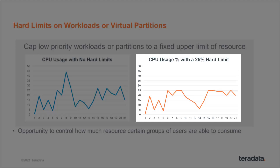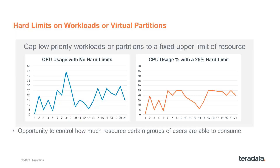So we do that by putting a 25% hard limit on the workload. The workload will still consume the same amount of CPU or I/O at the end of the day, but it's going to stretch out further in time because we're limiting it to only a certain percent at any point in time. This is a way to guarantee that certain workloads, however resource intensive they are, will not be allowed to interfere with other active work.